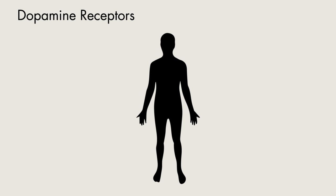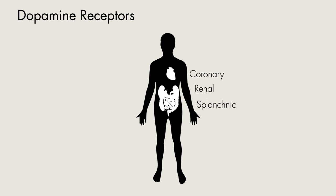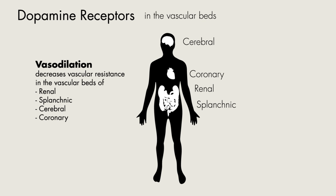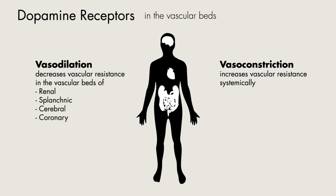Now talking about the dopamine receptors. These are mainly found on renal, splanchnic, coronary, and cerebral vascular beds, and stimulation of these receptors causes vasodilation. There are also another subtype of dopamine receptors which will cause vasoconstriction by inducing the release of norepinephrine.